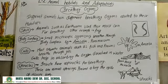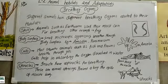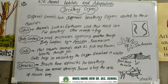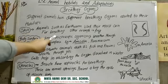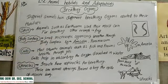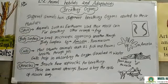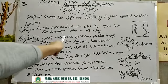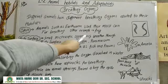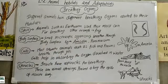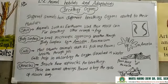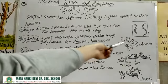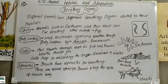Next is body surface. Small microscopic organisms breathe through their body surface. Microscopic organisms such as amoeba and paramecium breathe through their body surface.